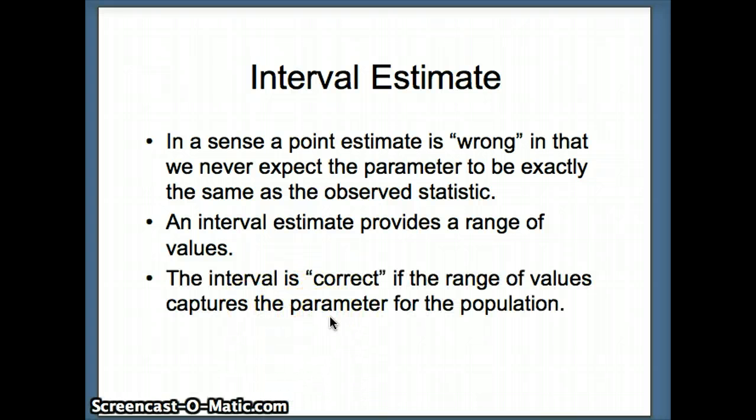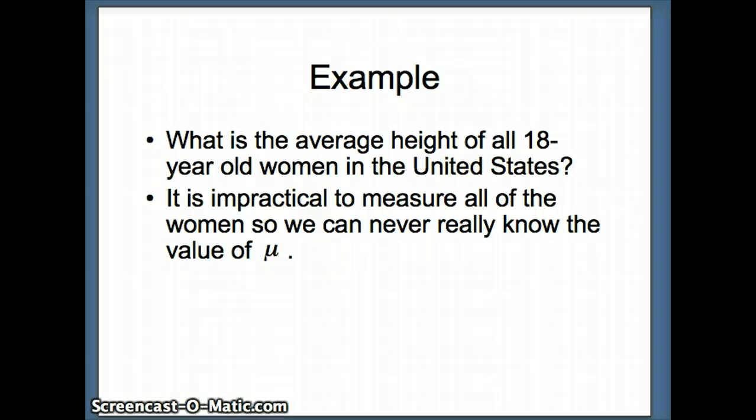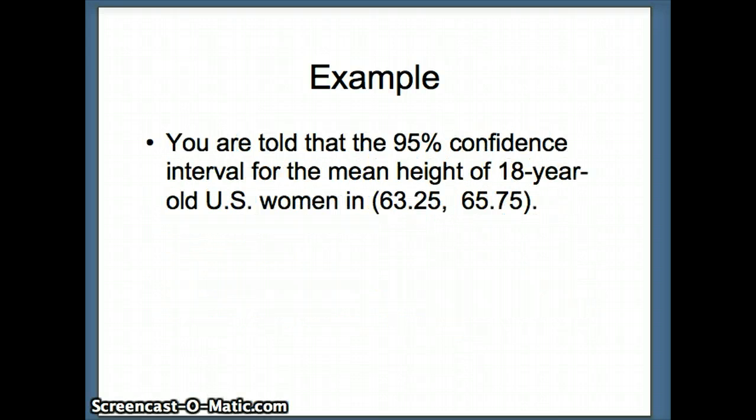So our goal is to figure out something about the population mean μ. We're going to construct an interval, and that interval will be correct if that interval captures that μ. Here's an example: we ask ourselves what is the average height of all 18-year-old women in the United States? It really is impractical to measure all of them, so it's probably fair to say that we can never really know the exact value of μ. It's unknowable. But instead, we're going to measure a random sample of women and then use that information to make an inference or an educated guess about the behavior of μ, the population mean.